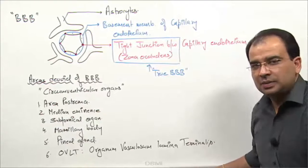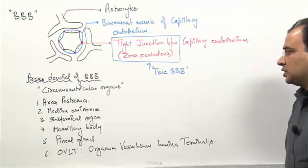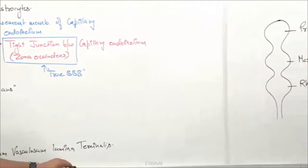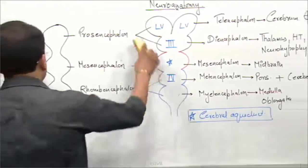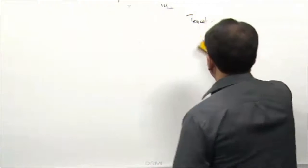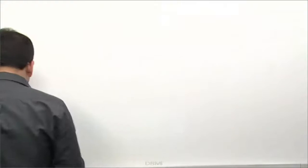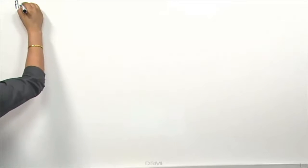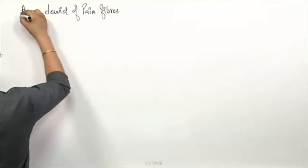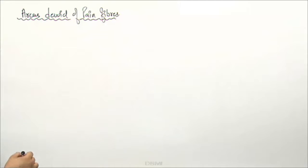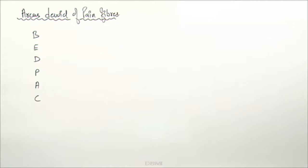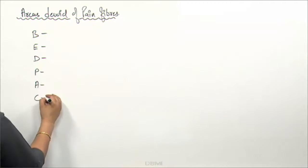There are also certain areas in the brain which are devoid of nociceptive fibers or pain fibers. Let us have a list of the structures which are devoid of pain fibers. You can remember them using the mnemonic BED PAC — the areas devoid of pain fibers.